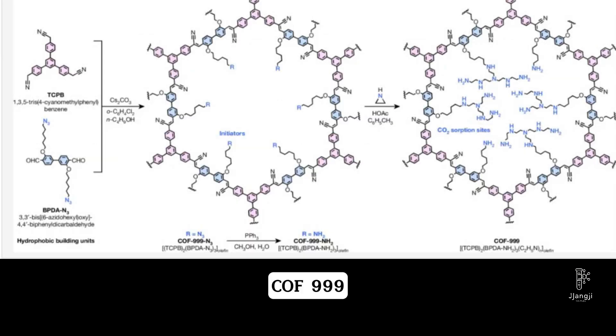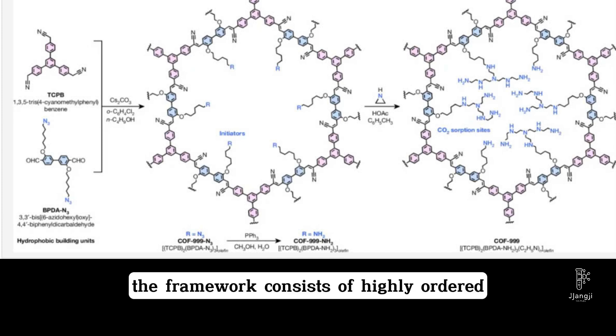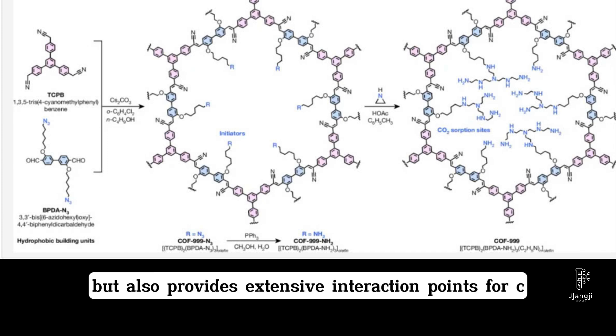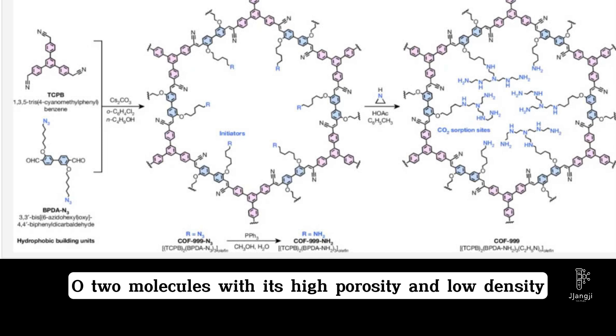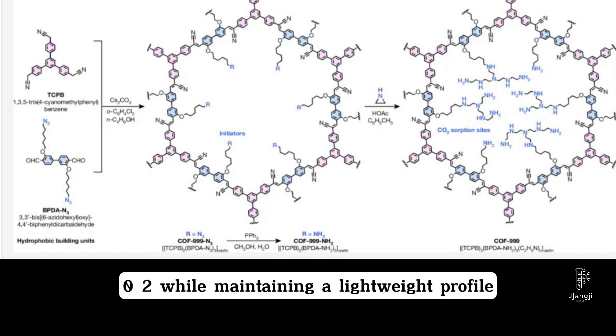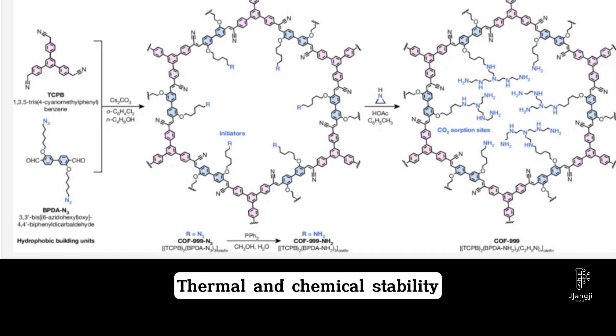COF-999's structural design is integral to its performance. The framework consists of highly ordered, crystalline hexagonal channels formed by robust covalent bonds between organic molecules. These channels are lined with polyamines, which act as active sites for CO2 capture. The hexagonal configuration not only optimizes packing efficiency but also provides extensive interaction points for CO2 molecules. With its high porosity and low density, COF-999 is capable of capturing substantial amounts of CO2 while maintaining a lightweight profile. Additionally, the covalent bonds within the framework contribute to its exceptional thermal and chemical stability, ensuring that COF-999 remains effective over multiple adsorption-desorption cycles without degradation.